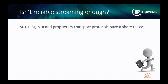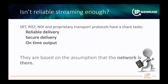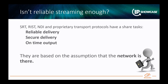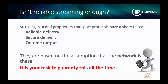So, isn't reliable streaming enough? I'm a big supporter of RIST, SRT, and NDI, and they do have means to do error recovery and jitter recovery. They provide reliable delivery, secure delivery, and on-time output after jitter buffering. But they are based on the basic assumption that the network is there. If the network is misbehaving, nothing will make it work. So it is your task to guarantee that the network is functioning all the time.